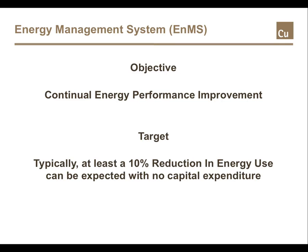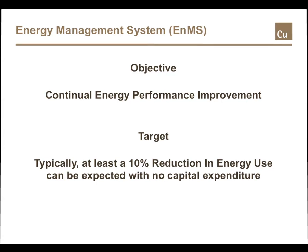An energy management system is commonly abbreviated to EnMS, as opposed to EMS, the abbreviation for Environmental Management System. The objective of an energy management system is continual energy performance improvement, and the system will typically target at least a 10% reduction in energy use with no capital expenditure.